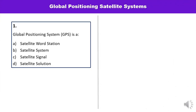Question number one: Global Positioning System GPS is — satellite word station, satellite system, satellite signal, or satellite solution? You will pick the correct answer very quickly. It's a satellite system, so the correct answer is B.